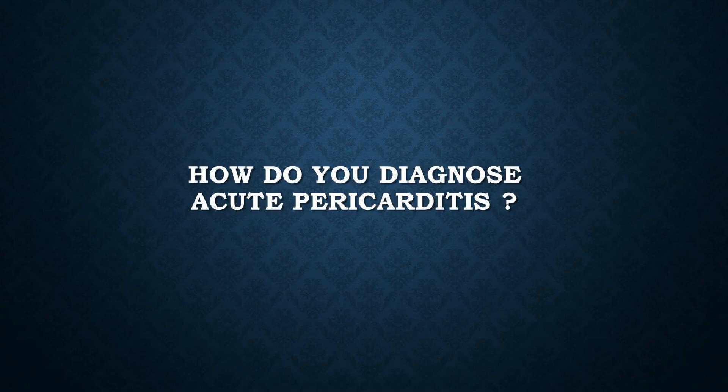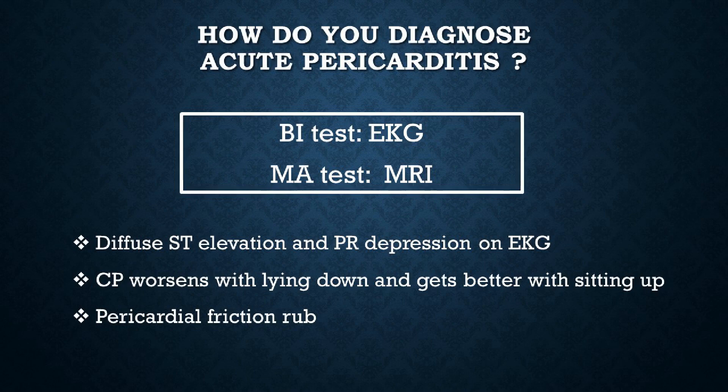Question: How do you diagnose acute pericarditis? Think of the physical and the EKG findings. The patient with acute pericarditis will present with chest pain. So what do you have to rule out immediately? Of course, MI. And how do you do that? With EKG. And indeed the best initial test for diagnosing acute pericarditis is EKG.